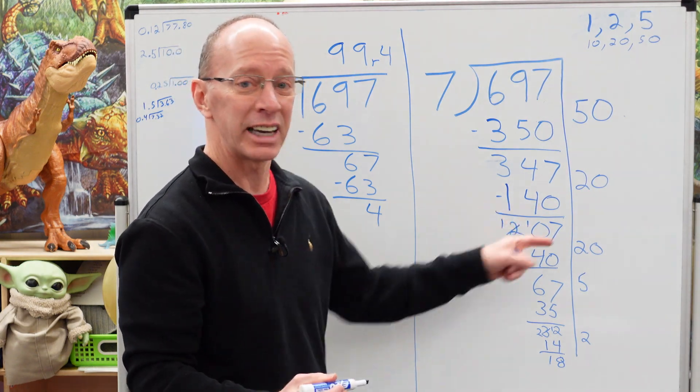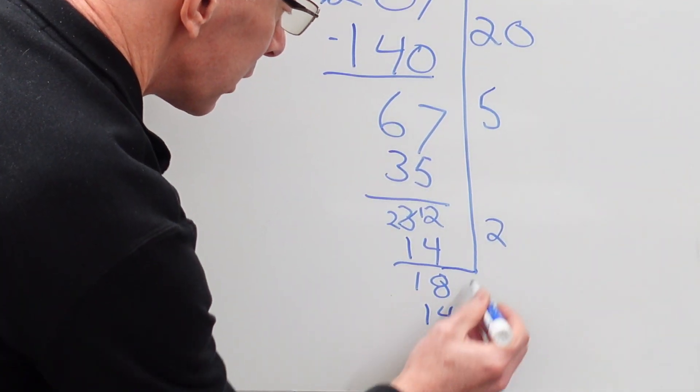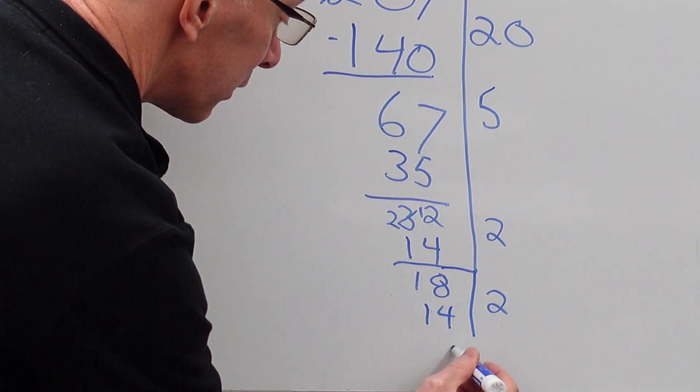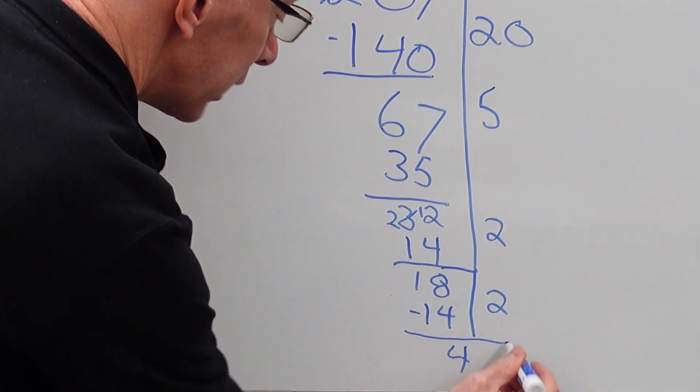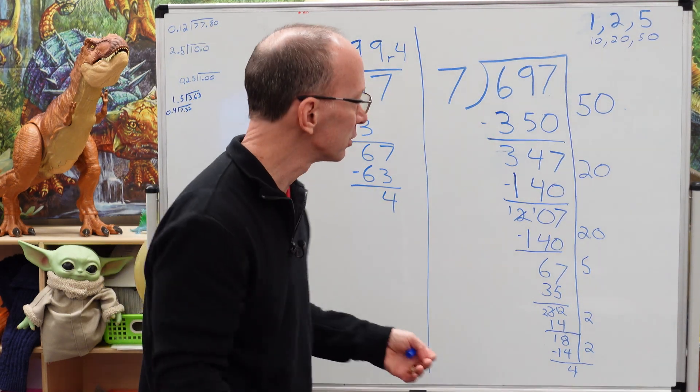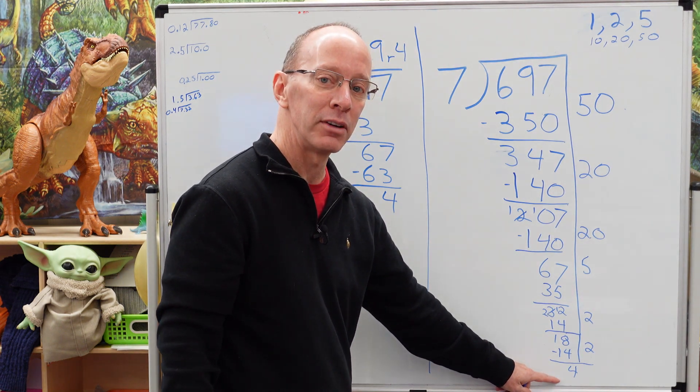Alright. So I can still take another two times seven. Bring this line down here. Two. Alright. Subtract that. That would be four. Now this is, like I said, this is like a puzzle. So I'm going to go ahead and add up all these numbers. And this number right here is going to be my remainder.